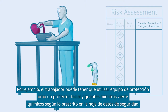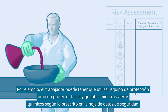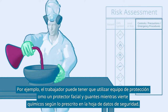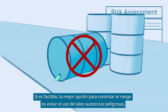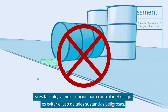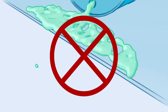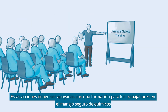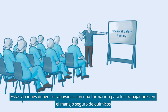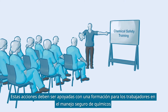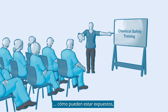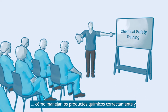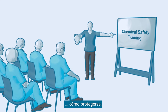For example, the worker may have to use protective equipment such as a face shield and gloves while pouring, as prescribed in the Safety Data Sheet. If feasible, the best option to control the risk is to avoid using such hazardous substances.